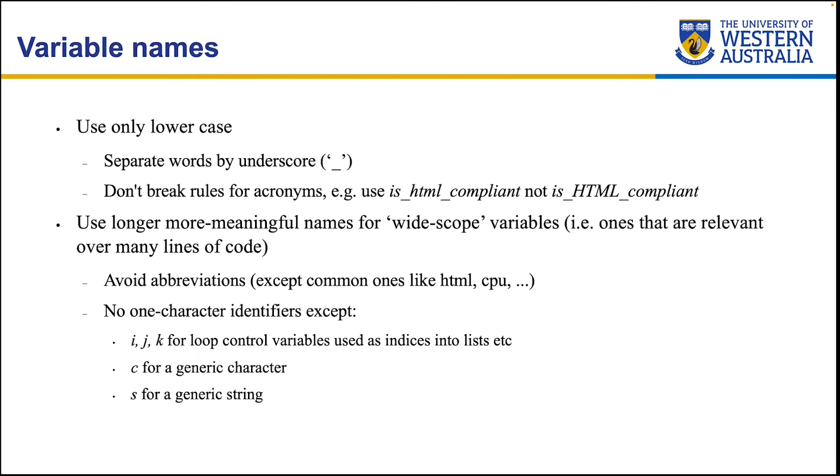Let's start with the first one: variable names. Usually you should only use lowercase to create variable names. And if you're using multiple words, you should separate them by underscore. Don't break rules for acronyms. For example, use is_html_compliant and not is capital letters HTML compliant. So even though HTML has been used as an acronym that uses capitals, when it comes to variable names, it's better to keep it lowercase. Why do we want to do that? Well, the capital letters we actually have used for it later on. This is just a guideline, so you don't have to stick with it. But in general, sticking with a single rule and using that consistently throughout the code is good.